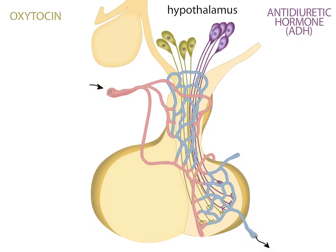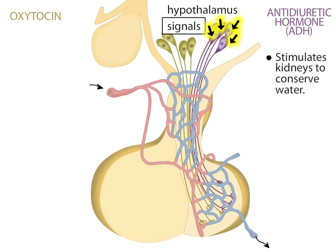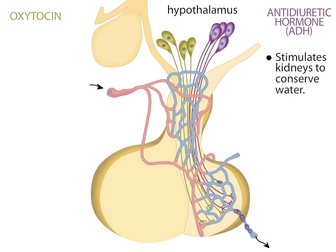The ADH-producing neurons respond to signals relating to thirst and water regulation. ADH stimulates the kidneys to conserve water. Although water conservation is its major role, ADH also constricts peripheral blood vessels, which increases blood pressure. For this reason, ADH is also known as vasopressin.